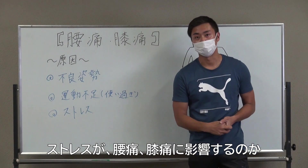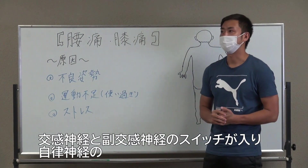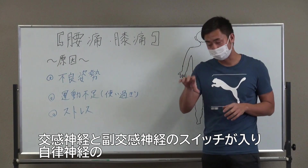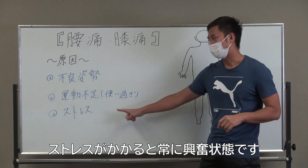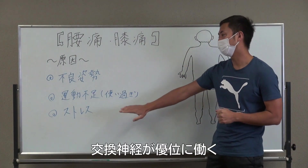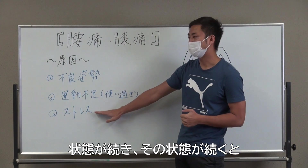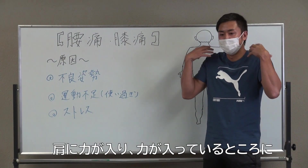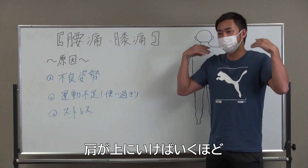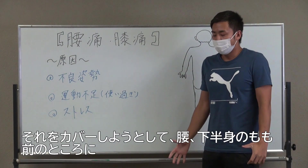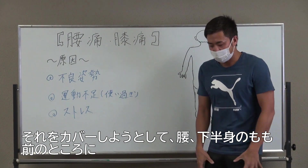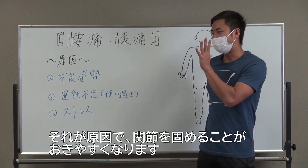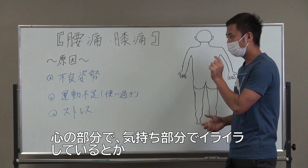もう一つがストレスです。なぜストレスが腰痛や膝に影響があるのかというと、ストレスがかかると常に交感神経が優位に働く状態が続くんですね。それが続くと体の筋肉を緊張させるということが起きます。そうすると、例えば肩に力が入ってくると重心の位置が上に上がってきちゃうので、それをカバーしようと思うと腰とか下半身のももの表にすごく力が入りやすくなって、関節を固めるということが起きやすくなるんですね。